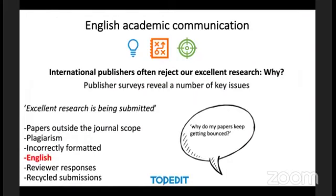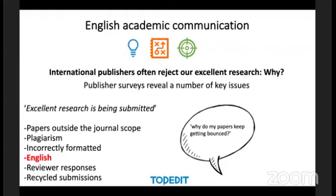There should be no difference between the standard of language in a paper written anywhere in the world. International publishers often reject excellent research because of issues including: papers outside the journal scope, plagiarism, incorrectly formatted articles, English language problems, reviewer responses, and recycled submissions. Today we're going to talk about English language issues, but we'd be delighted to have you back for future webinars to discuss the others.